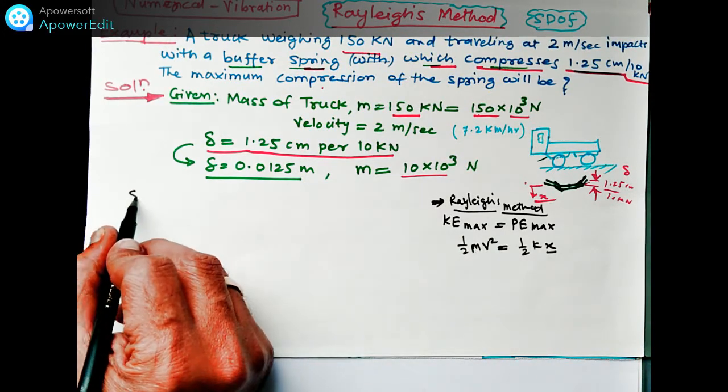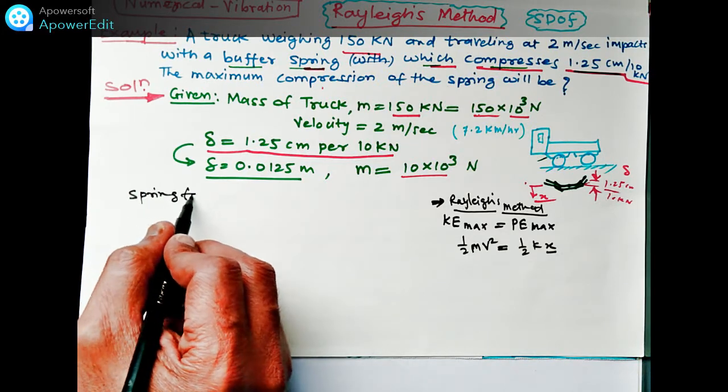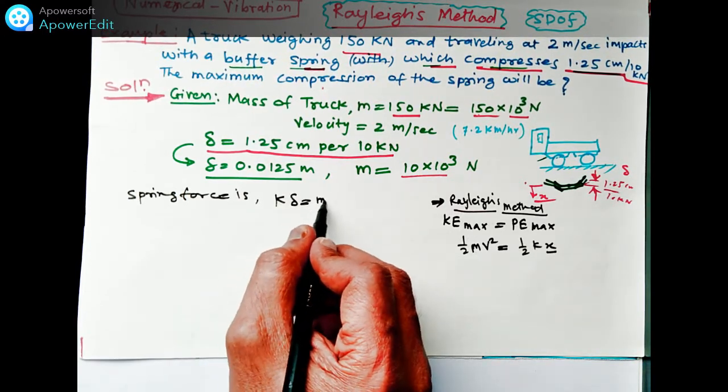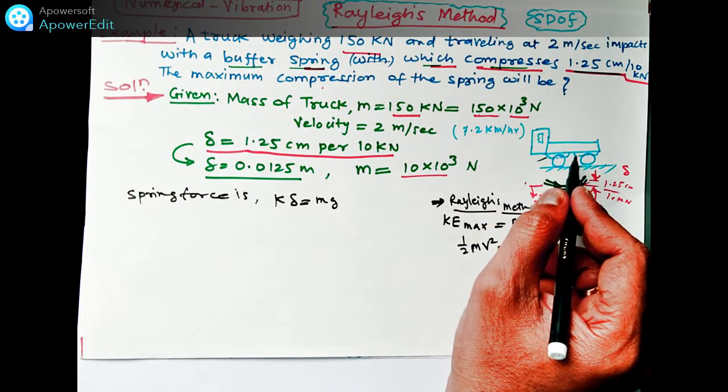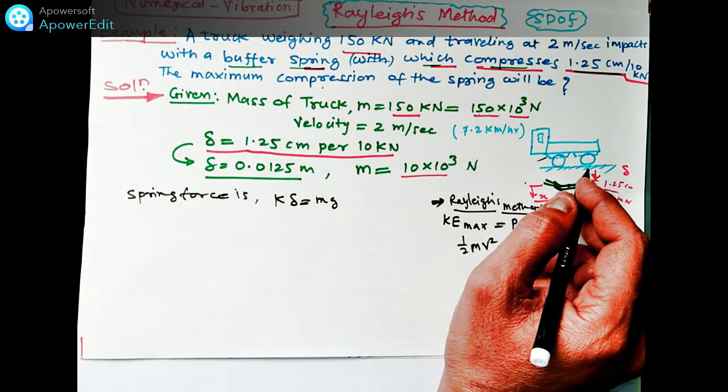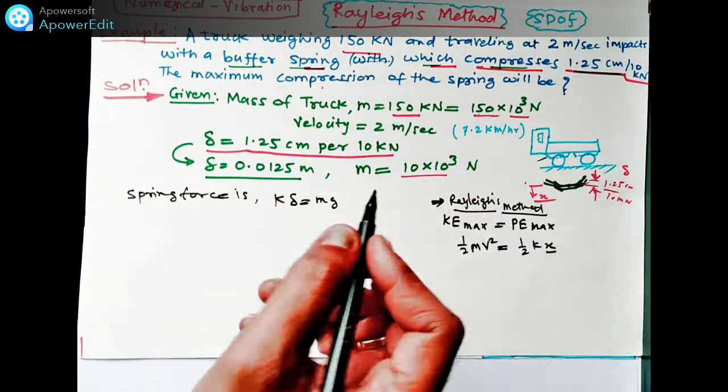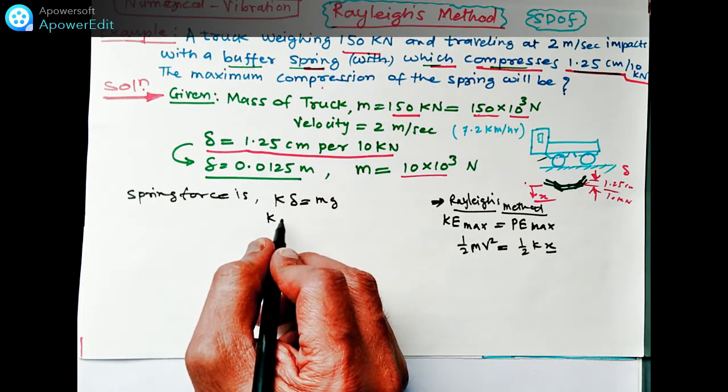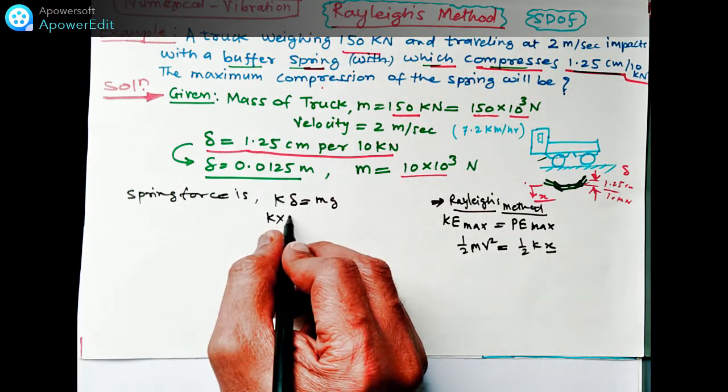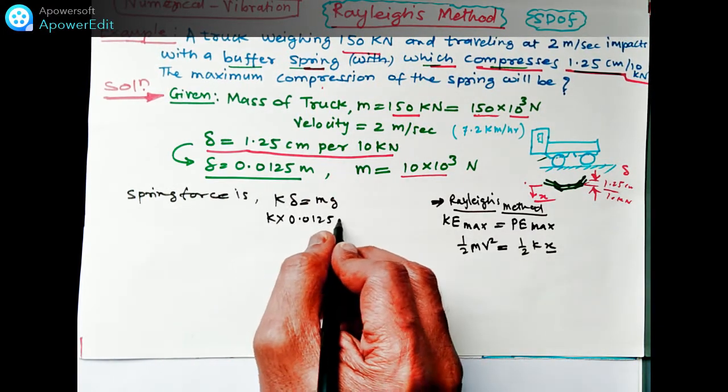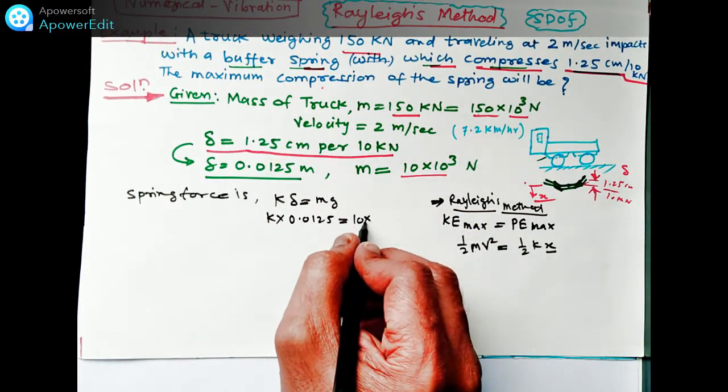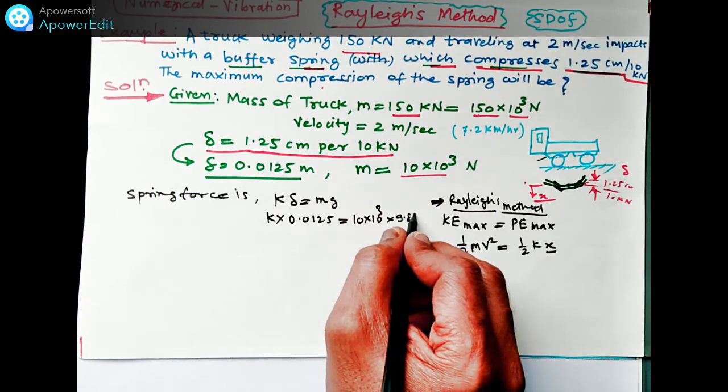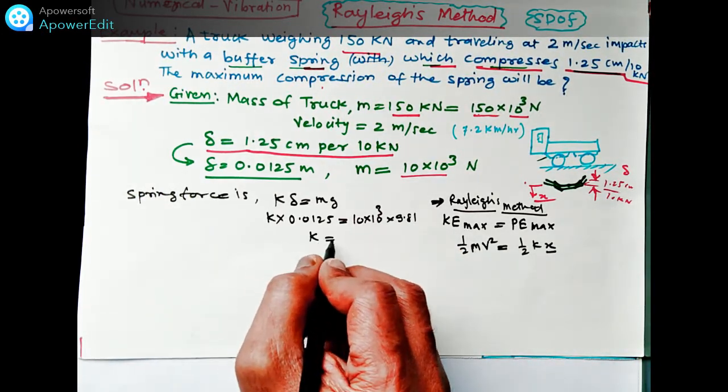By using spring force, spring force is how much? K into delta which is equal to M into G, the weight of this truck. We have to find out K. So here, to find this K, for this delta 1.25 cm means 0.0125 for this M, how much M? 10 kN is equal to 10 raise to 3 into G, 9.81. G is the gravity. From this we can find out the spring stiffness.